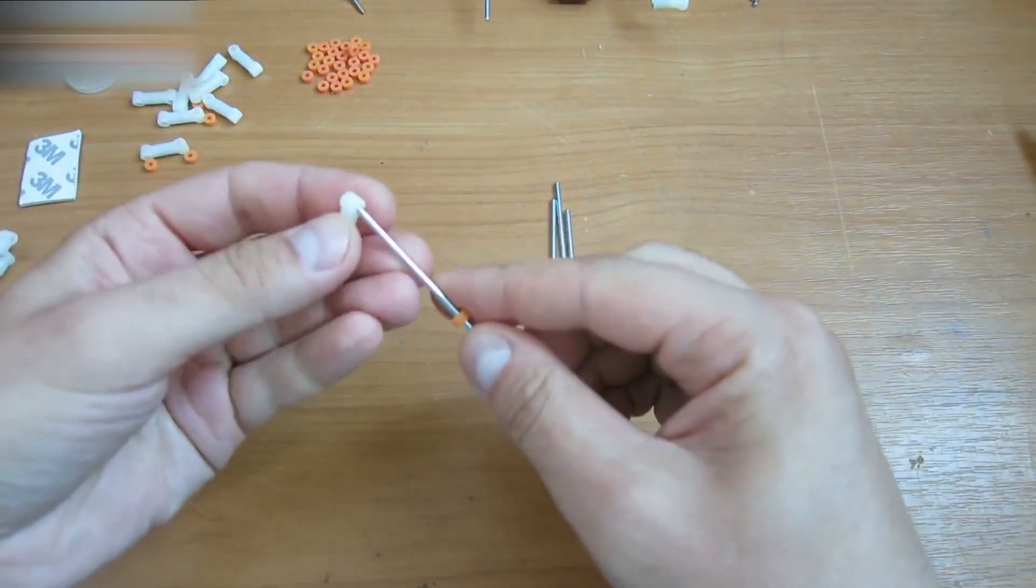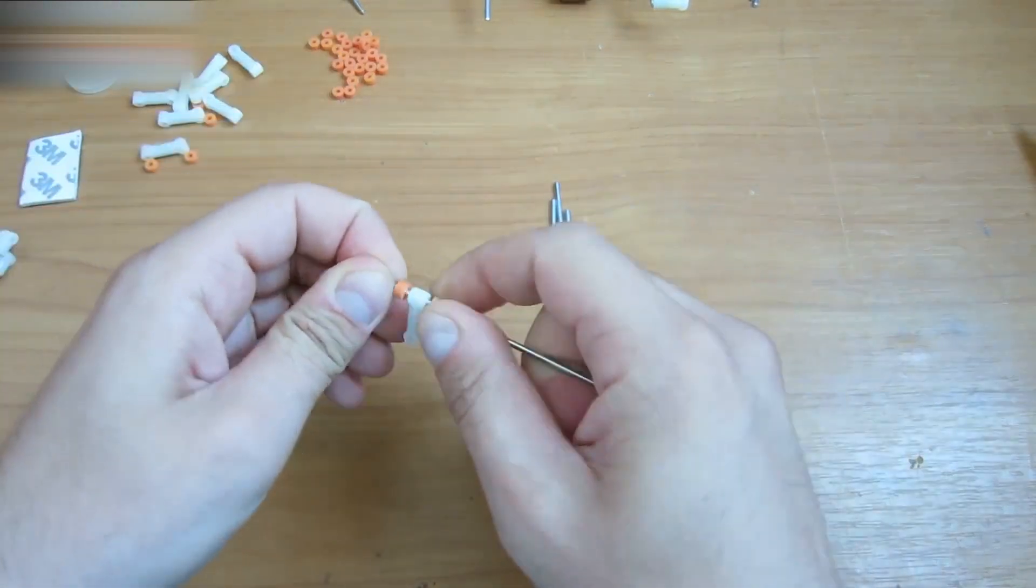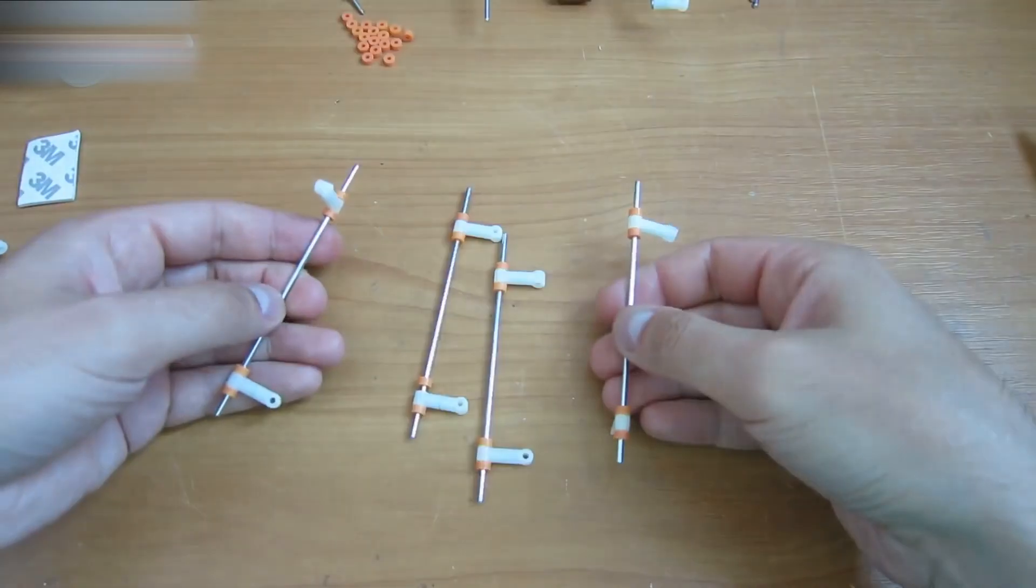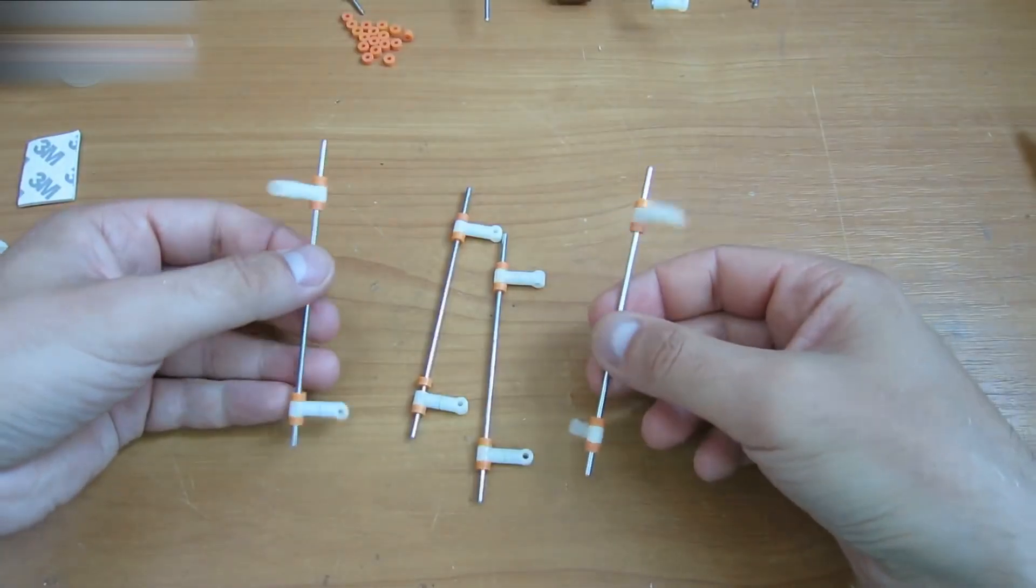Put the stoppers and the parts that were assembled in the beginning of the video on the long leg parts. It should look like this.